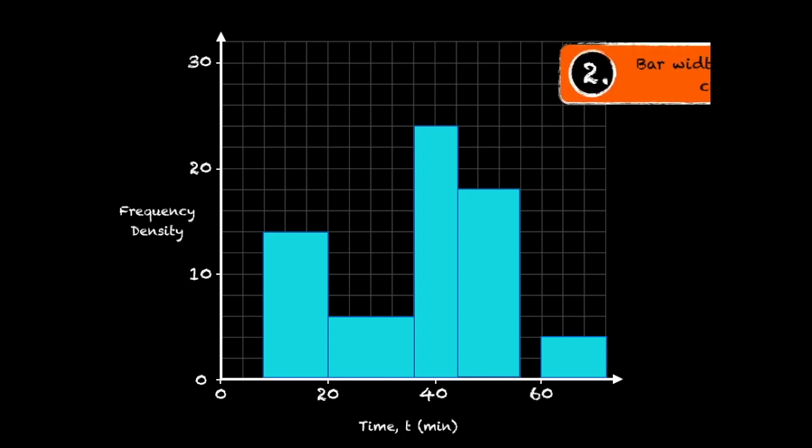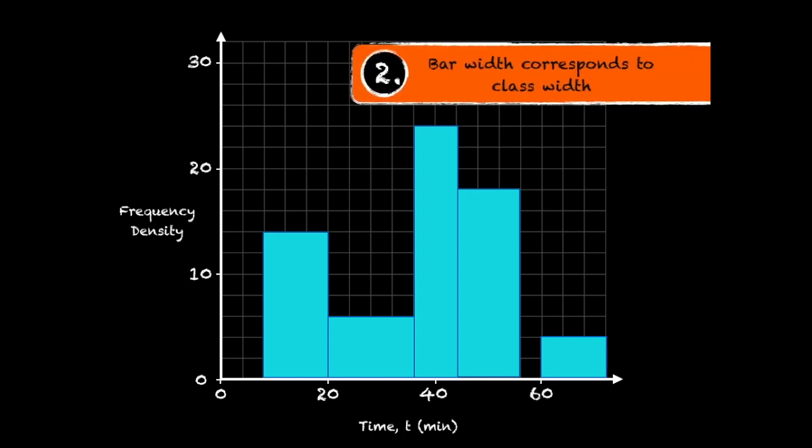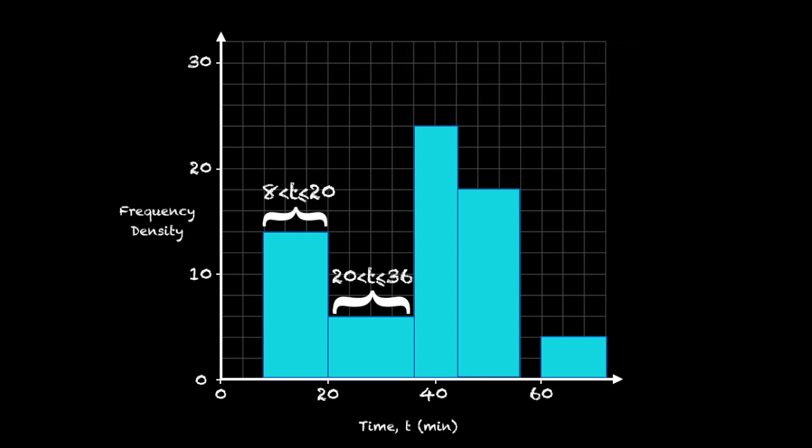The second characteristic is that the bar width corresponds to the class width. And what I mean by this is that the width of each bar is going to vary depending on the width of the class. For example, in this histogram the first bar is more narrow than the second bar because the class that it's representing has a smaller range.